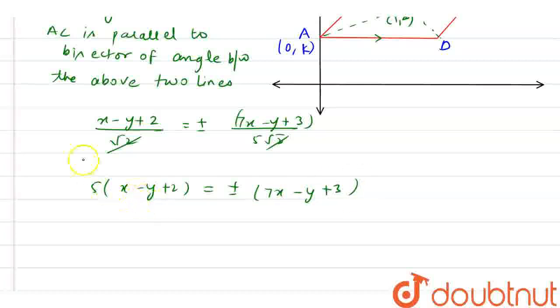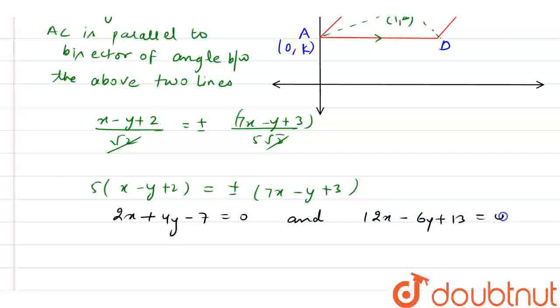Now, if you solve this, then you will get two equations here. My first equation will be 2x + 4y - 7 = 0 and my second equation will be 12x - 6y + 13 = 0.